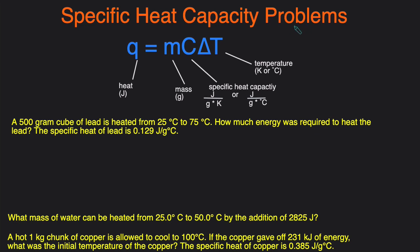If the problem mentions specific heat capacity, you're probably going to be using this equation right here: Q equals MC delta T, or sometimes you might hear it as Q equals MCAT. Q stands for the heat and that has to be in joules. M is the mass and the units for that is grams. C is the specific heat capacity and the units for that is joules per gram times degrees Kelvin, or it can also be joules per gram times degrees Celsius, and these are interchangeable.